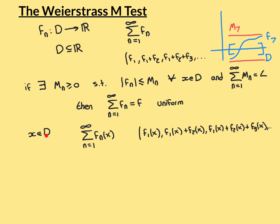For pointwise convergence, I take a general point x in my domain D. I then take my series of functions and evaluate all the functions at x, which gives me a series of real numbers: the sum from n equals 1 to infinity of fn evaluated at x. The proper meaning of this converging is that the sequence of partial sums converges — f1(x), then f1(x) plus f2(x), then f1(x) plus f2(x) plus f3(x), and so on.